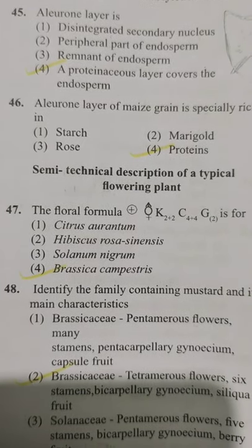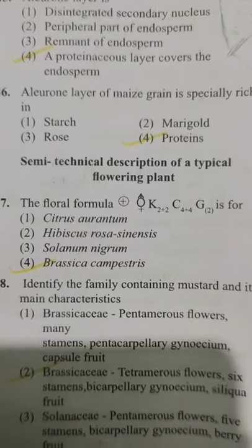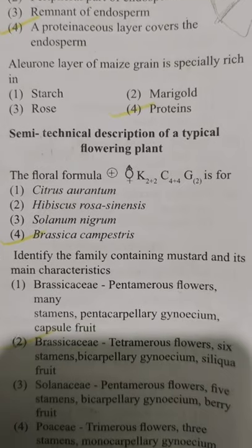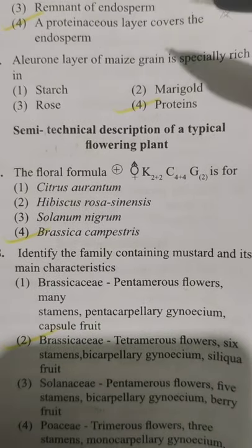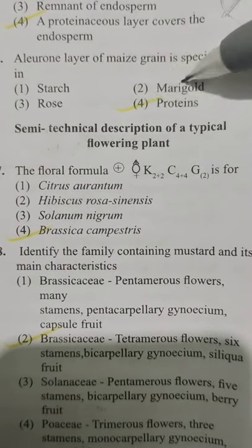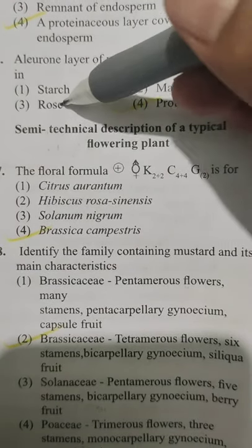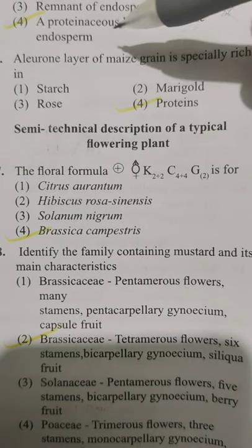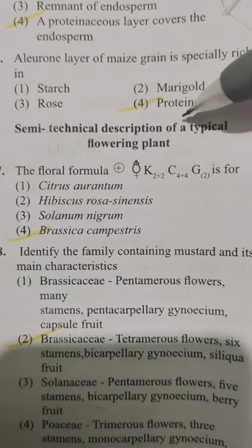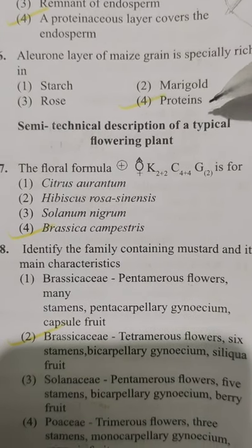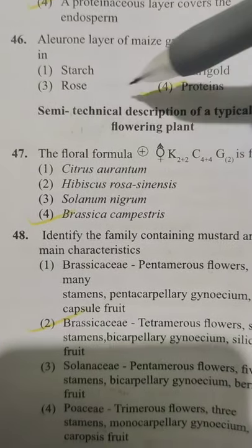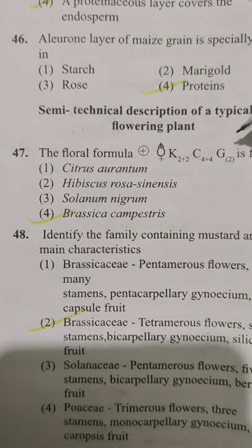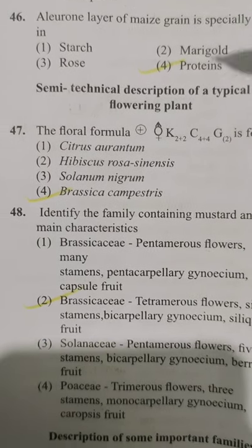The aleurone layer of maize grain is especially rich in — Option 1 starch, Option 2 fat, Option 3 oil, Option 4 proteins. It is especially rich in proteins — Option 4.